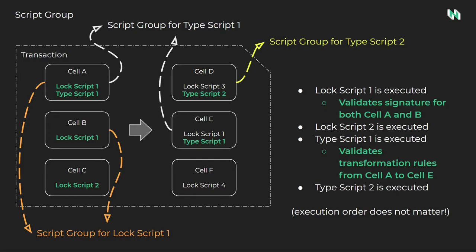A similar process would also occur for LockScript2. When LockScript2 makes a syscall for the script group input cells, only cell C will be returned. By using the script group, the number of input cells that needs to be processed drops from 3 to 1. When TypeScript1 executes, the script group will contain cell A and cell E. By analyzing the attributes and data within them, it can be judged whether the transformation complies with the developer's rules — for example, verifying that a token cell did not gain more tokens than were present in the input, ensuring tokens were not created from nothing.